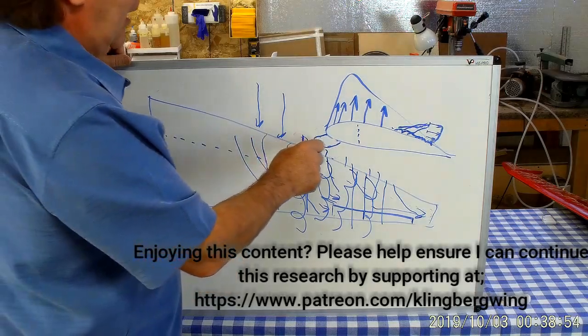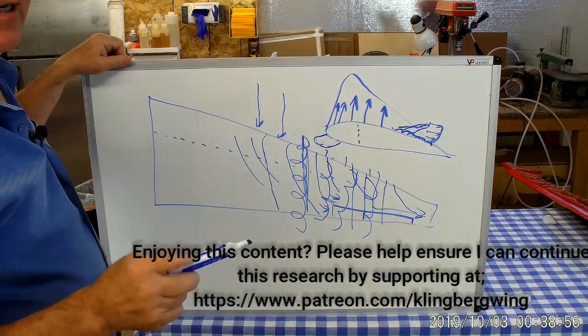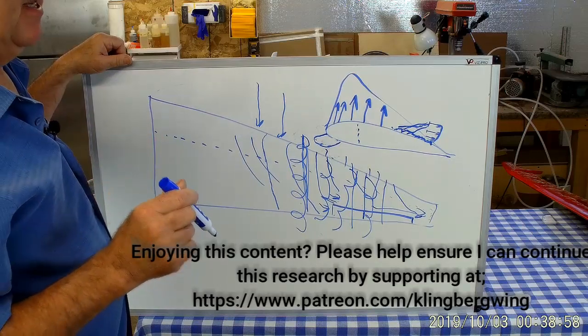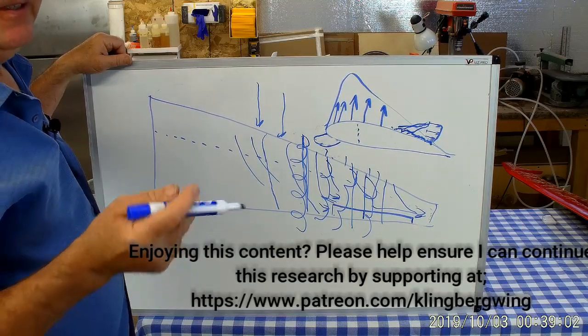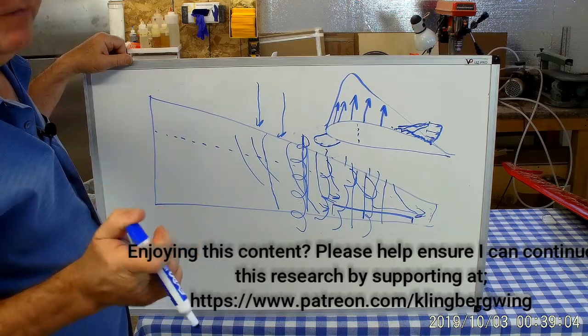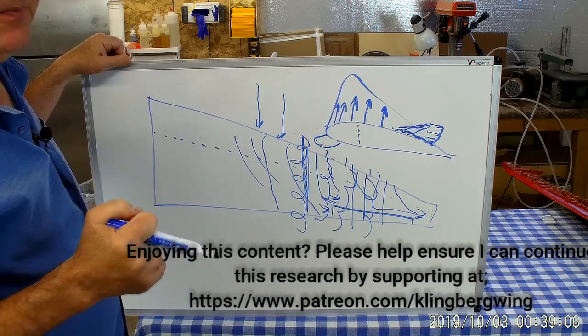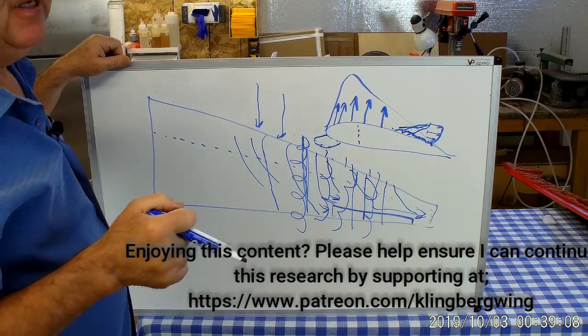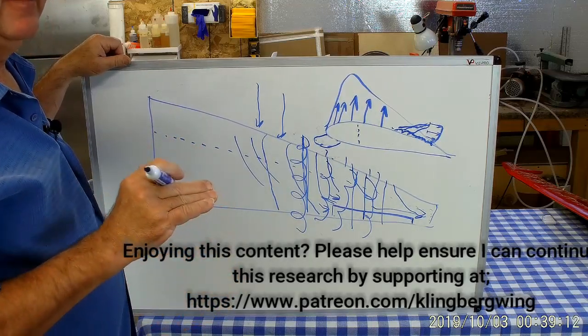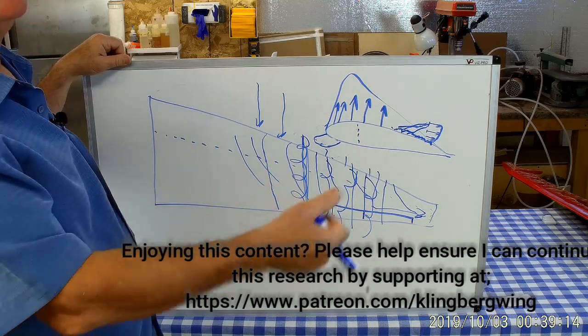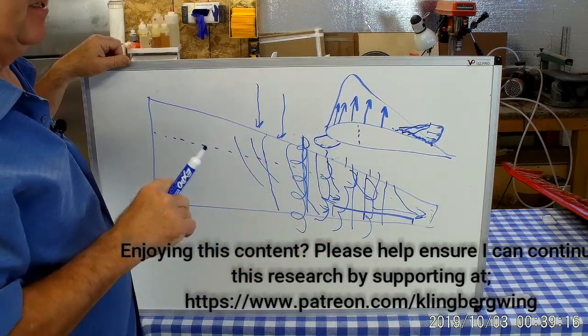The Swift has vortilons on it now—I believe they're velcroed on—and I hear that some pilots just don't fly with them because they find that they're only somewhat effective at reducing the spin tendencies, the stall spin. And if they just fly the aircraft properly they can avoid that situation and keep the vortilons off and avoid the drag associated with these vortices.